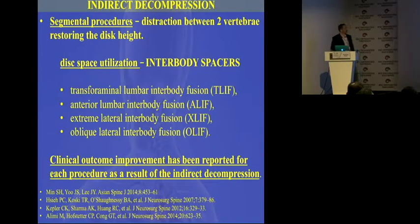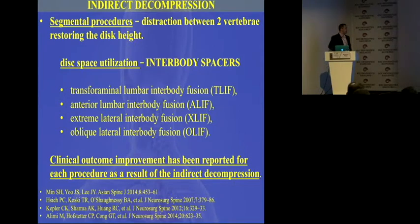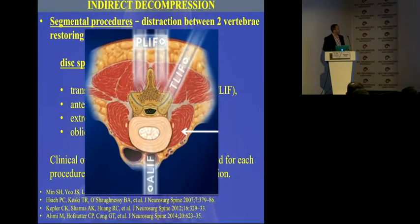These are the options we have for indirect decompression: transforaminal lumbar interbody fusion (TLIF), anterior lumbar interbody fusion (ALIF), lateral, and oblique interbody fusion. There is now a significant body of information showing that all of these generate volume in the foramen. We can utilize the PLIF — the classical, oldest technique — as well as the PLIF approach, ALIF, and the lateral and oblique techniques.